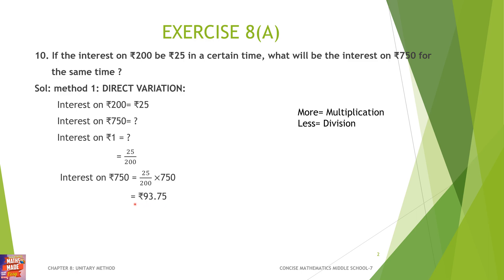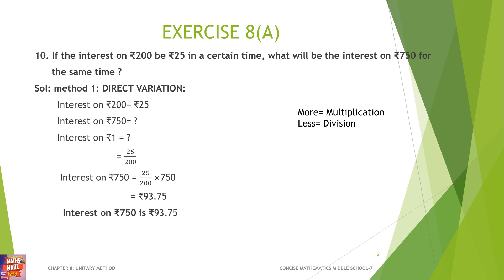So, what interest does he get on Rs. 750? He will get 93.75 — that is 93 rupees 75 paise.